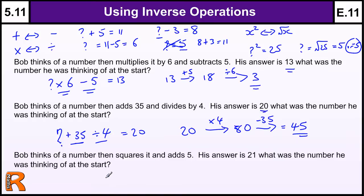There we go, another one. Bob thinks of a number, squares it. So he's going to square the number and then add 5, and that equals 21.